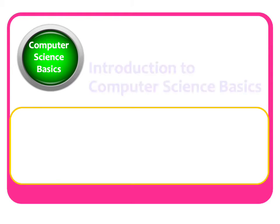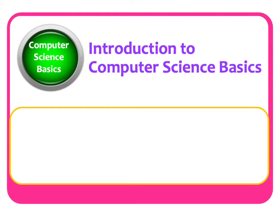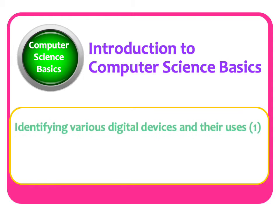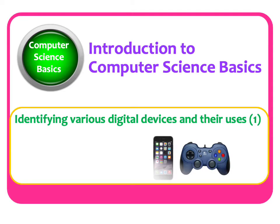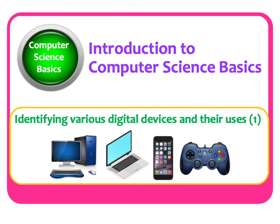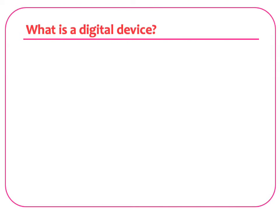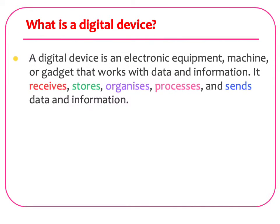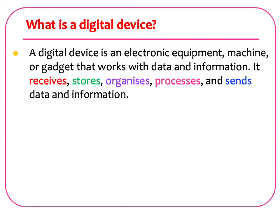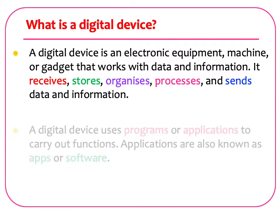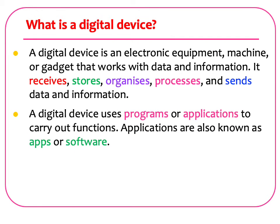We present the basics of computer science. In this lesson, we will identify various digital devices and their uses. A digital device is an electronic equipment, machine, or gadget that works with data and information. It receives, stores, organizes, processes, and sends data and information.